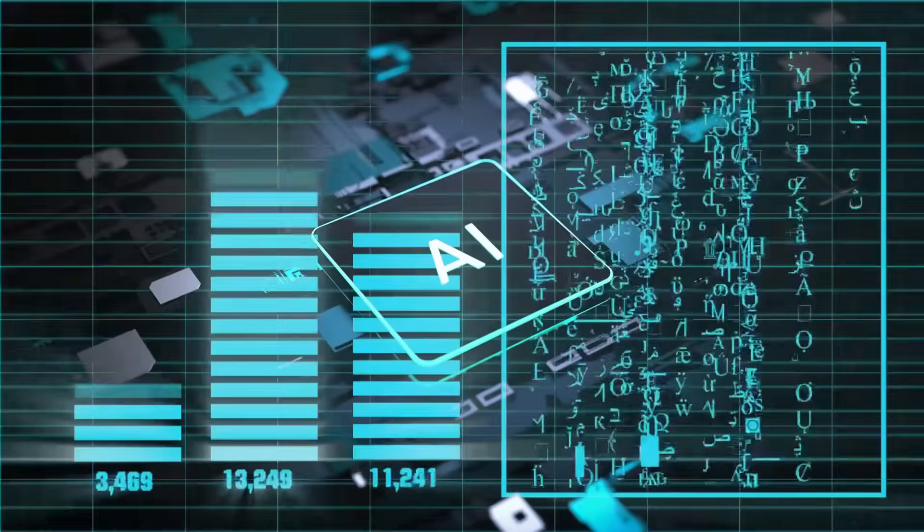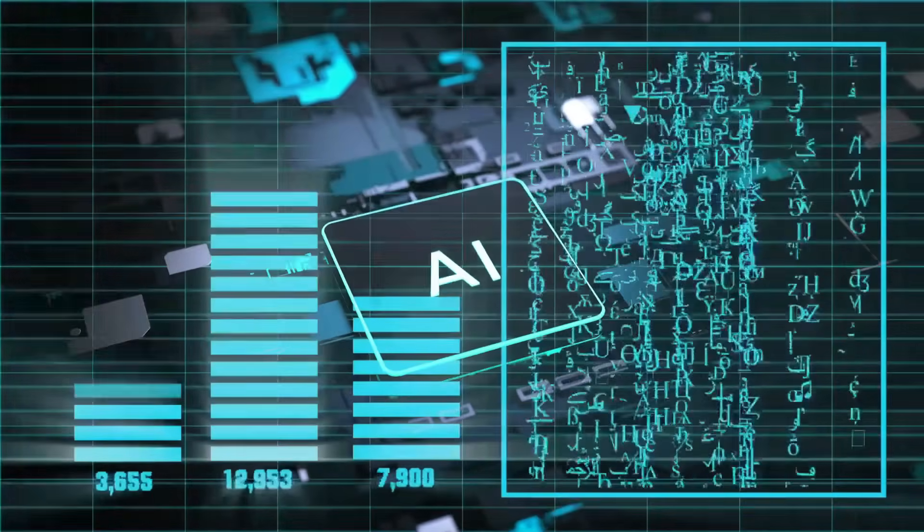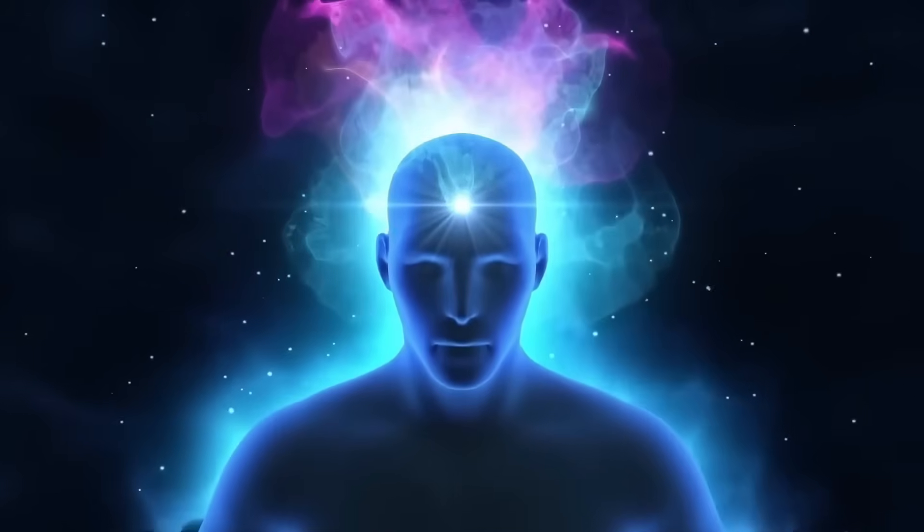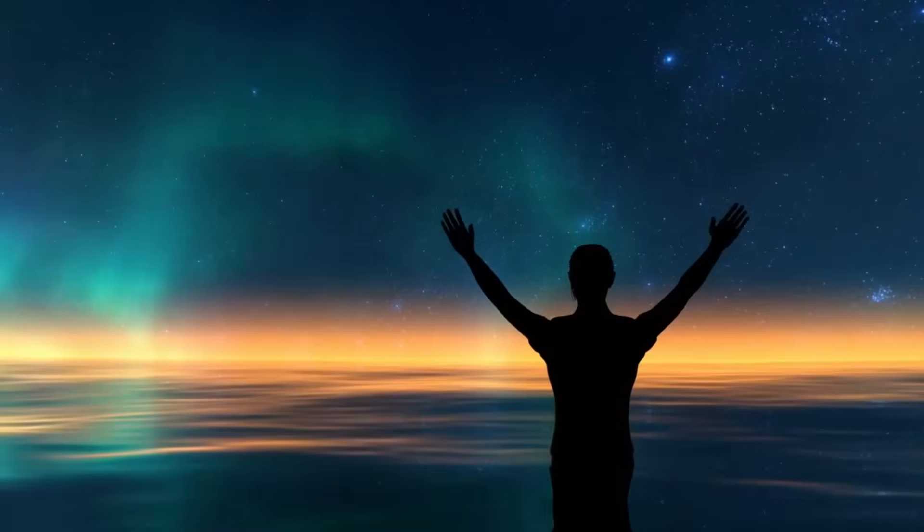The system found an astonishing correlation. The fractal geometries and recursive patterns observed in the brain, under the influence of psychedelics, closely resembled the mathematical models used in simulations of space-time. In other words, the same hidden code that seemed to emerge from these Schedule I substances was echoed in the underlying structure of simulated environments.